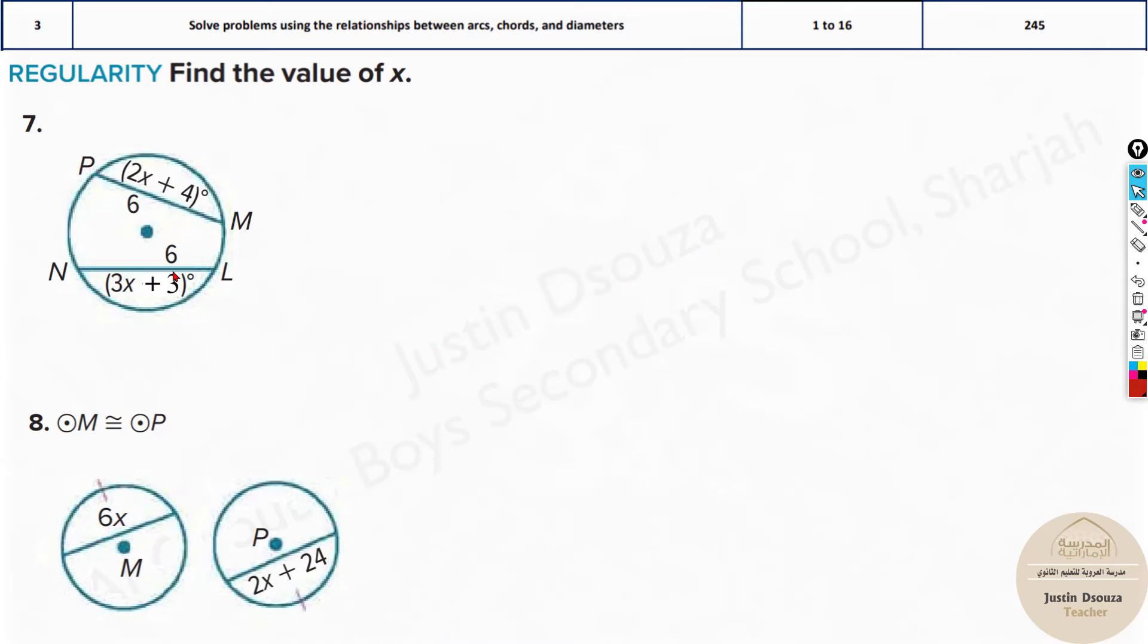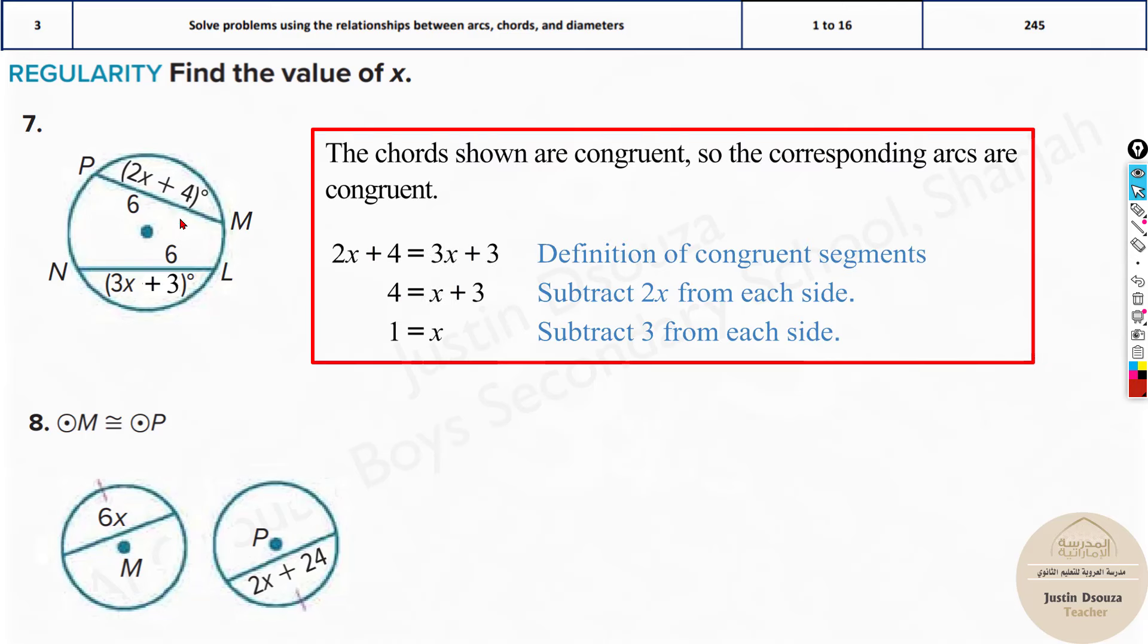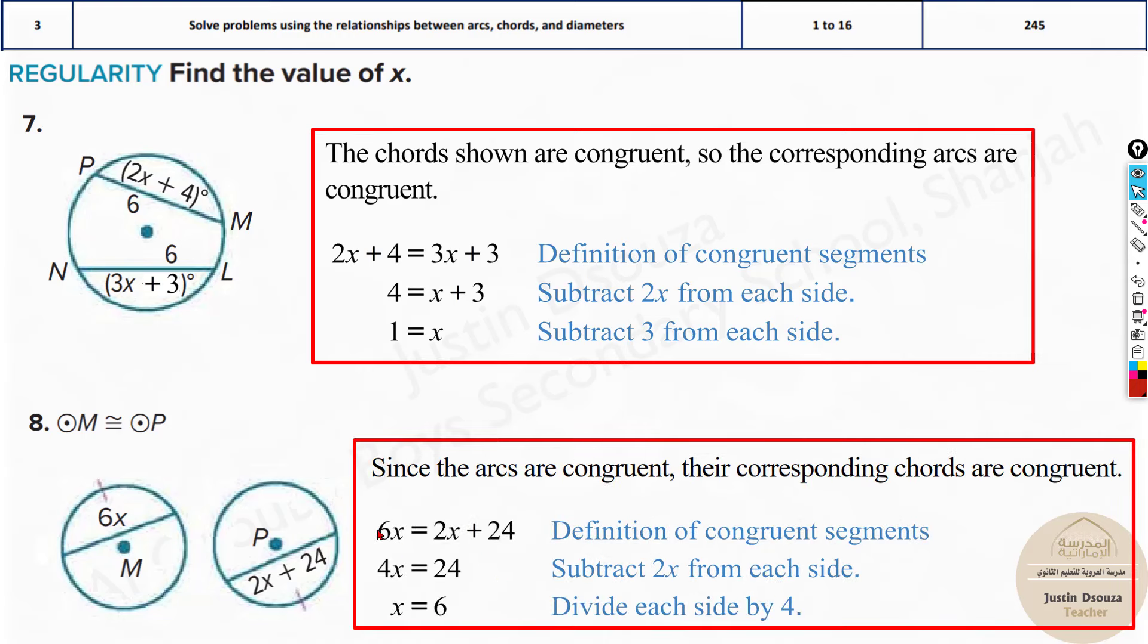Here for this question as well, it's just the same. The chords are given, just equate these two equations and you can solve it up. Equate the equation and solve it. Now here they have told these two circles are congruent, and then they have told this arc from this chord and this arc is equal. So just equate these both because they are congruent circles and you will get the answer equating them.